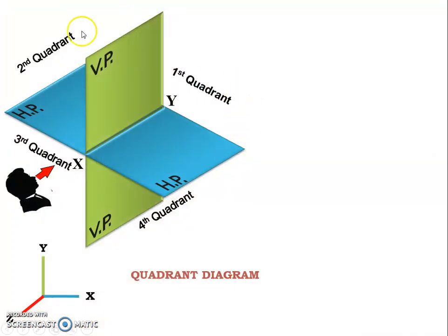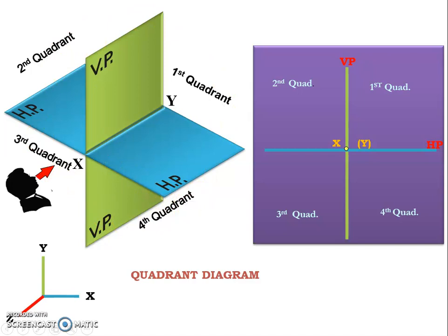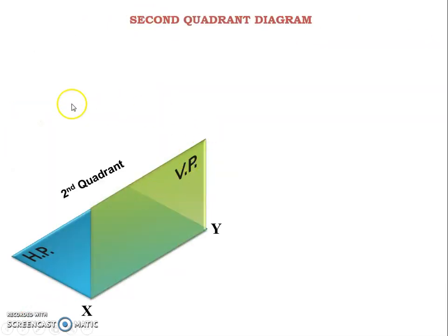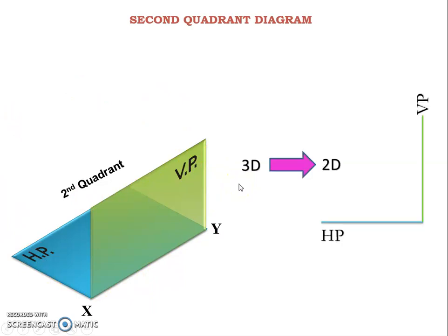Let us see the 3D representation of the quadrant diagram. The same thing can be shown in two dimensions like this. Here you can see the 3D representation of the second quadrant diagram and the same thing can be shown in 2D like this.